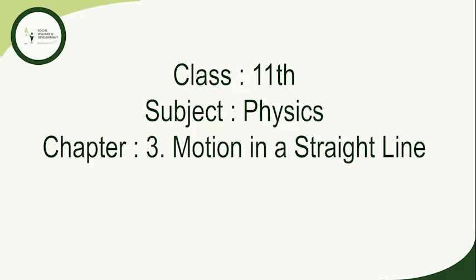Chapter 3: Motion in a Straight Line. Motion is common to everything in the universe. We walk, run, and ride a bicycle. Even when we are sleeping, air moves into and out of our lungs, blood flows in the arteries and veins. We see leaves falling from trees and water flowing down a dam. Automobiles and planes carry people from one place to another.